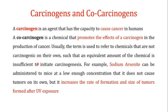When we talk about cancer there are two kinds of terms that we use. One is known as the carcinogen and the other is known as the co-carcinogen. A carcinogen is an agent that has the capacity to cause cancer in humans — meaning it has the ability to cause cancer on its own without the help of anything else.